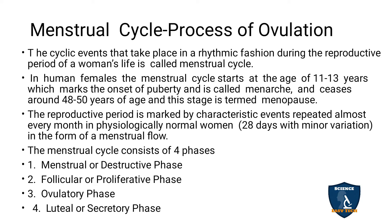The menstrual cycle ceases around 48 to 50 years of age, and this stage is termed as menopause. So during puberty, secondary sexual characteristics are produced. The cycle starts at 11 to 13 years — that starting period is called menarche — and it stops around 48 to 50 years, which is called menopause.